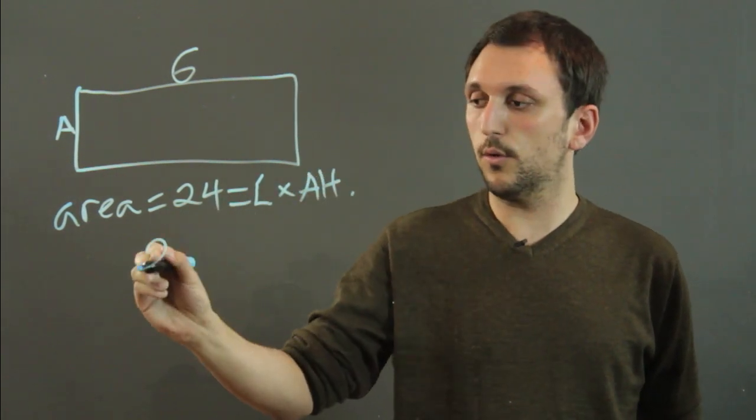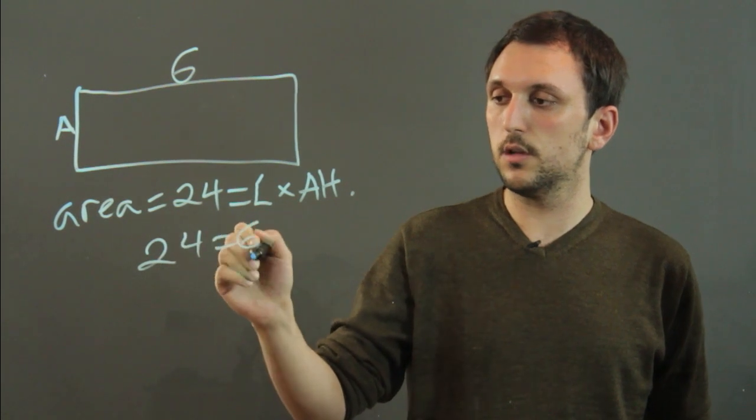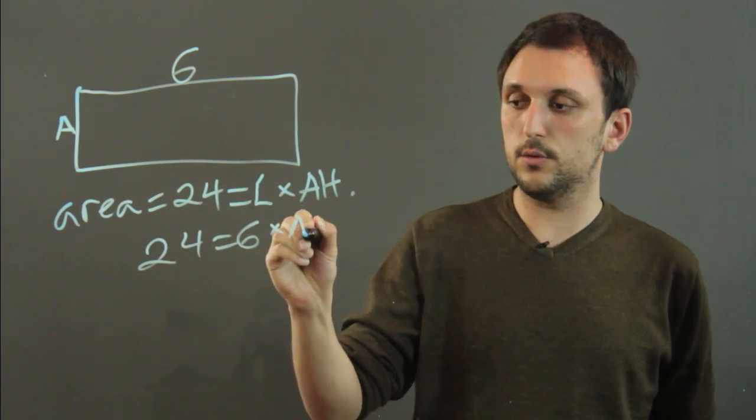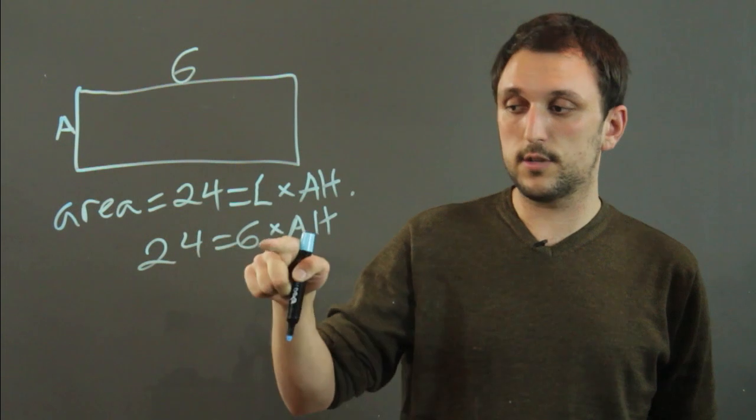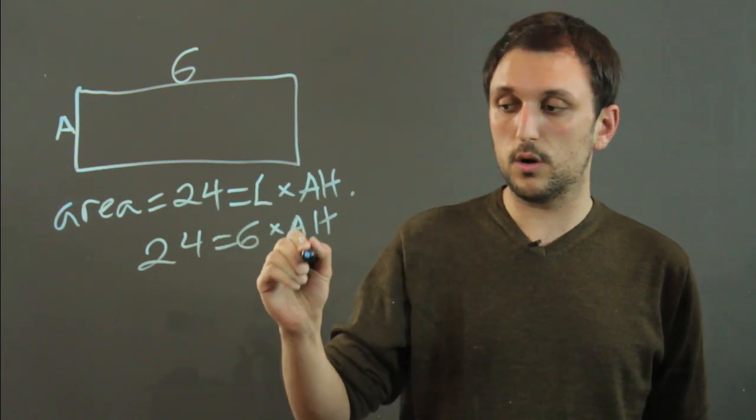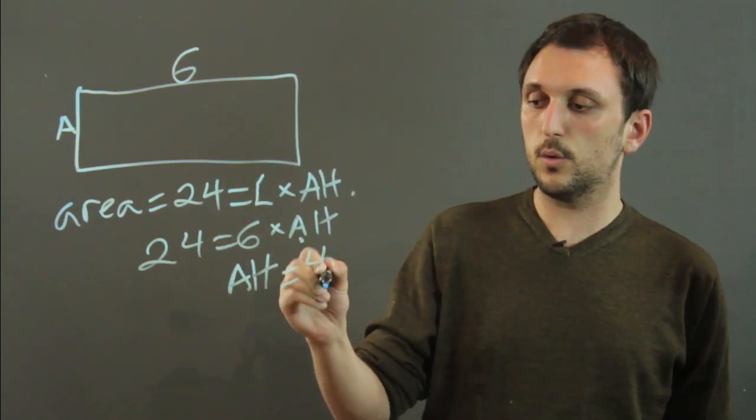So it's 24 equals 6 times altitude and 6 times what equals 24? 4. So altitude equals 4.